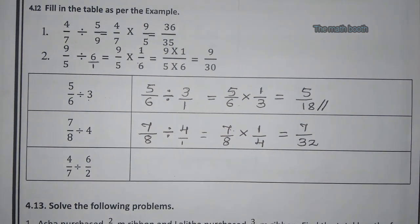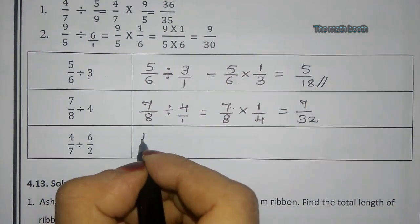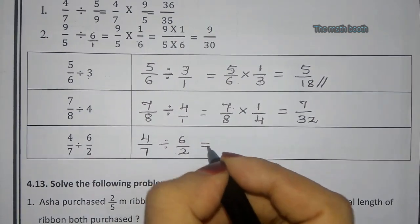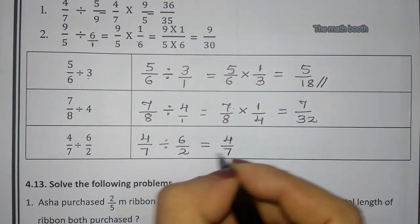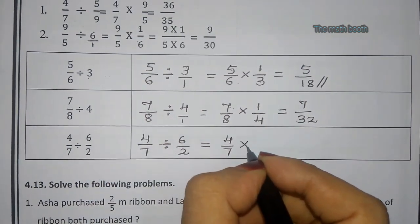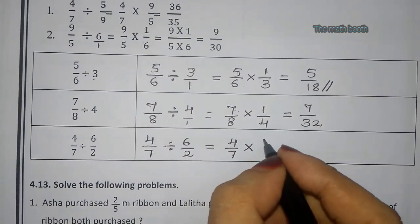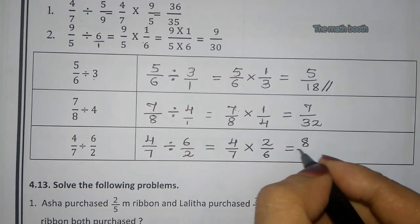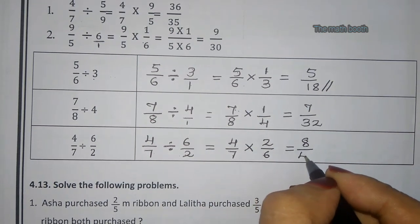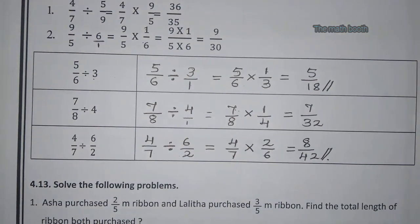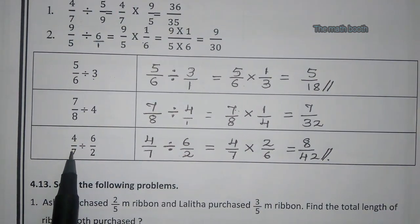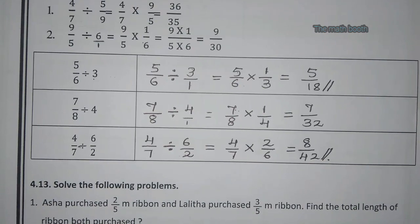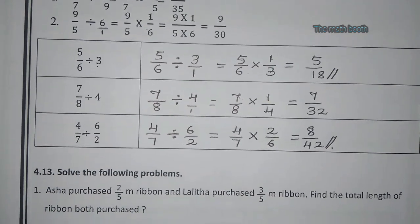Next question: 4/7 divided by 6/2. We keep 4/7 as it is, the divide becomes multiply, and 6/2 becomes 2/6. So we get 4 × 2 = 8 in the numerator and 7 × 6 = 42 in the denominator, giving 8/42. In summary, when there is division of fractions, we change the divide into multiply by taking the reciprocal of one fraction.